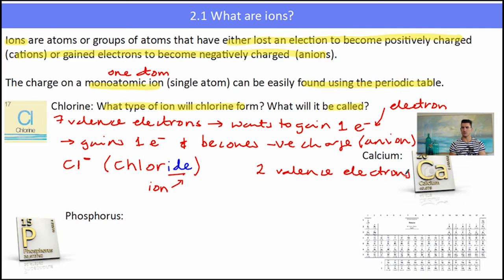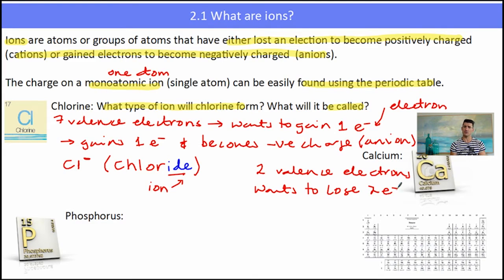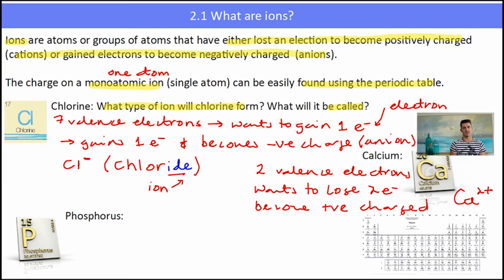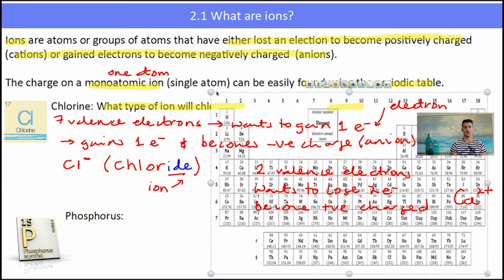Calcium — calcium is in group 2, the alkaline earth metals, which means it has 2 valence electrons. It would be really hard for calcium to gain 6 electrons and have a full outer shell, so what it will want to do is lose 2 electrons, and then its inner shell will be full. Losing electrons means it becomes positively charged. So it will have the formula Ca²⁺. Because it is a metal, the name of its ion doesn't change — it's just called the calcium ion.